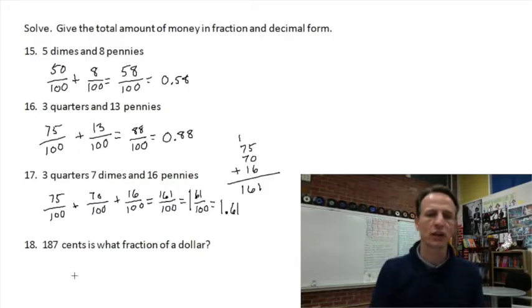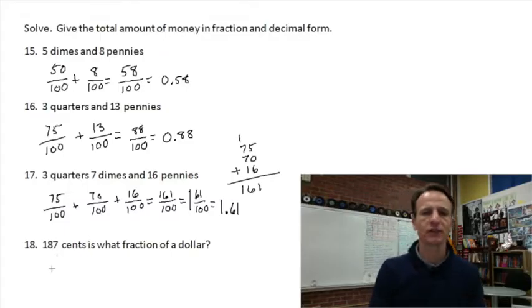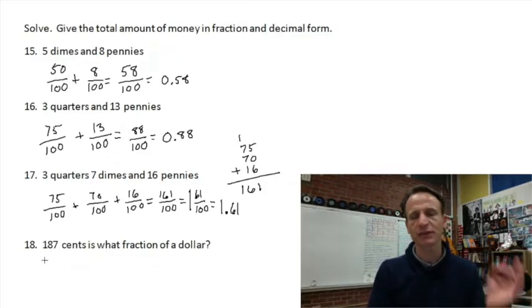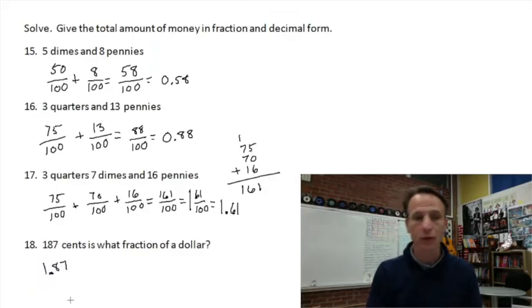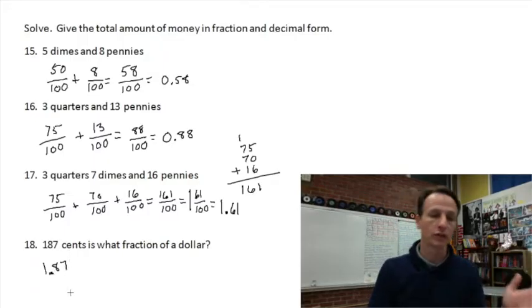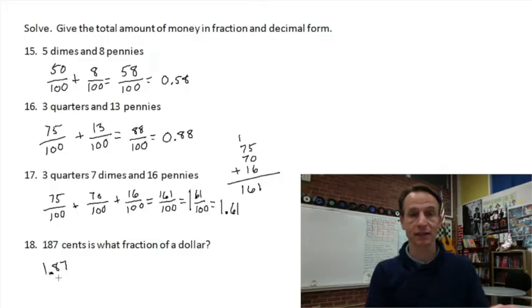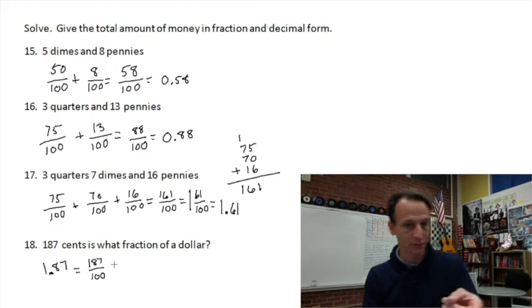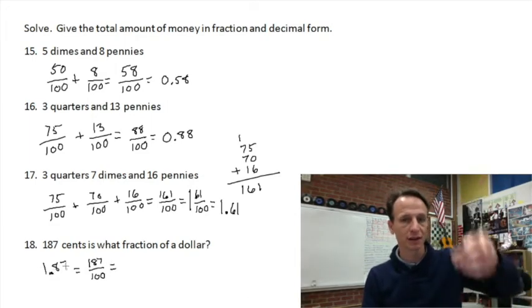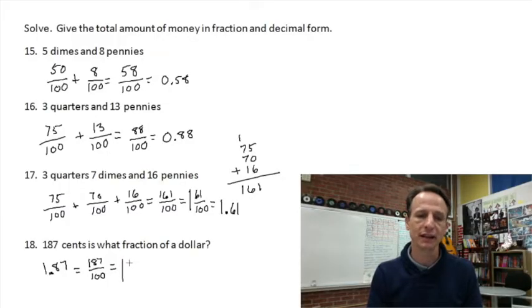187 cents: write the number 187 so the seven is in the hundredths place — that's 187/100, which is one and 87 hundredths. That's our fraction: 1 and 87/100. In decimal form: 1.87.